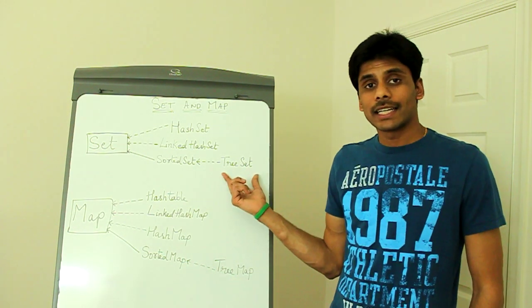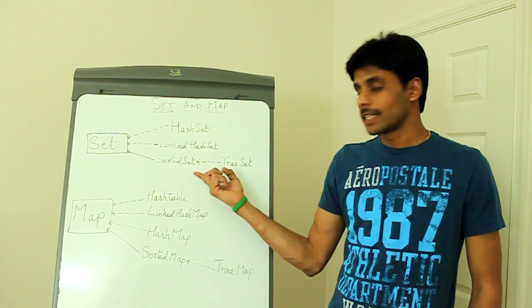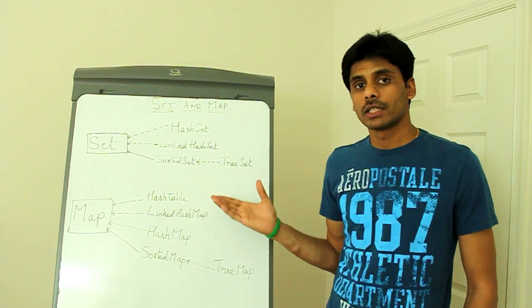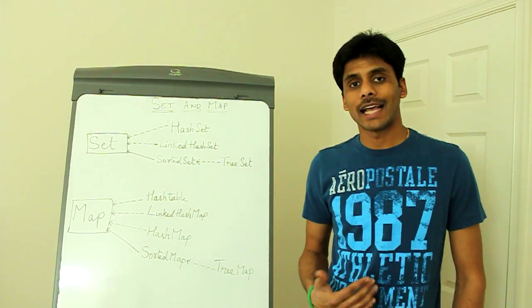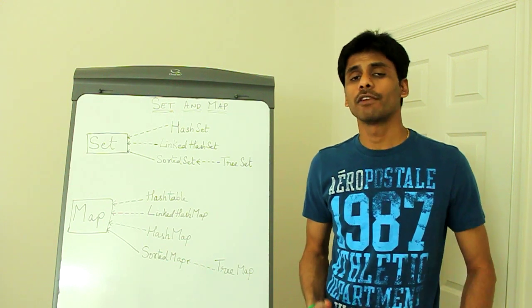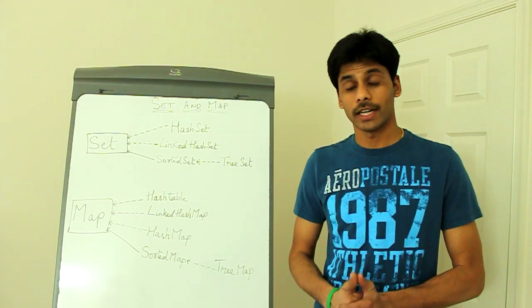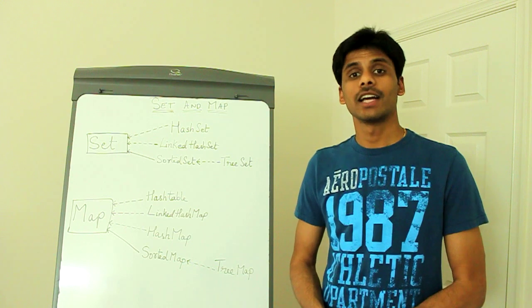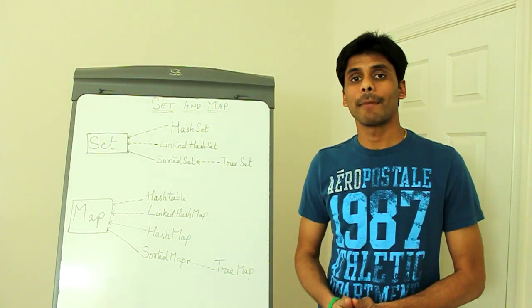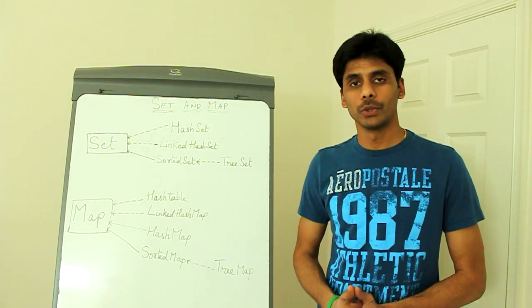The TreeSet implements the SortedSet interface and it sorts the objects as you add them to the TreeSet. By default it sorts them in ascending order, and if you want to change this you can pass in a constructor argument to do so.